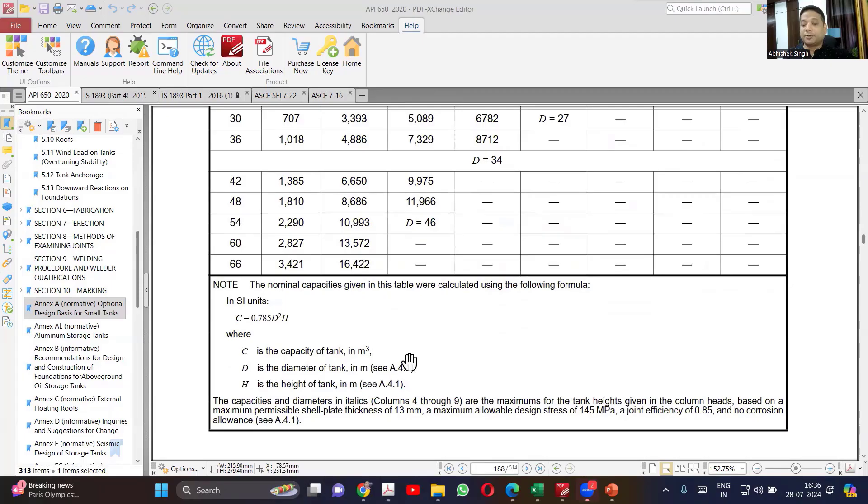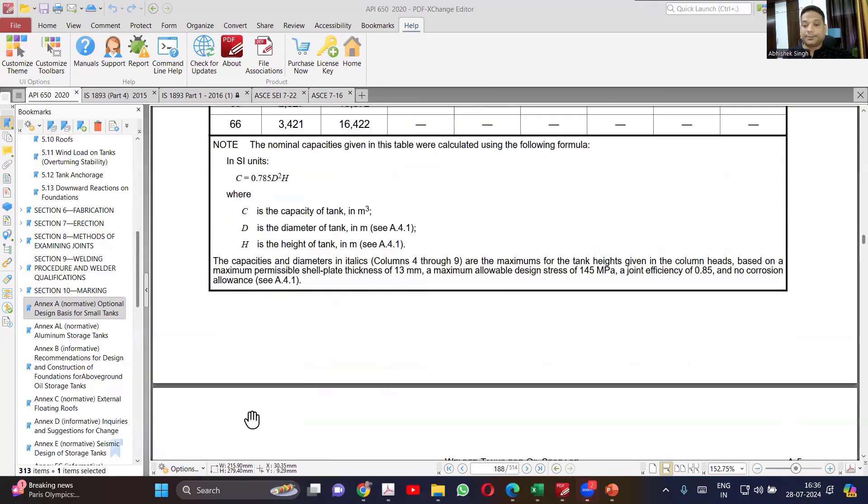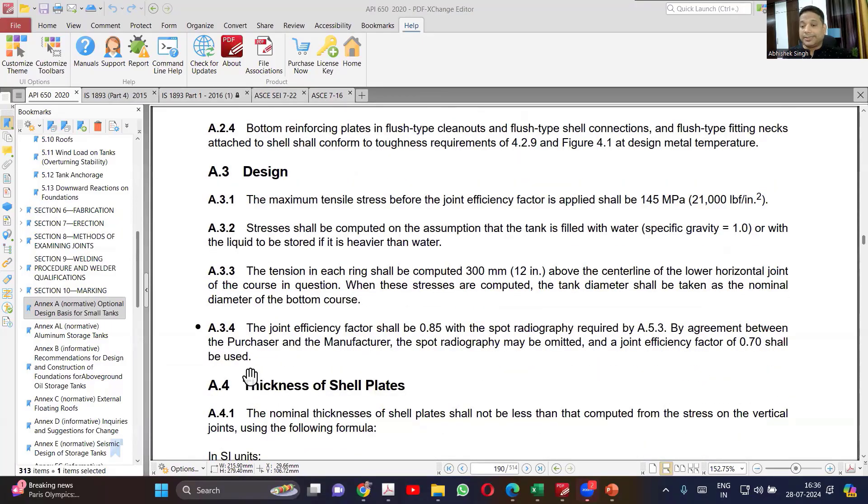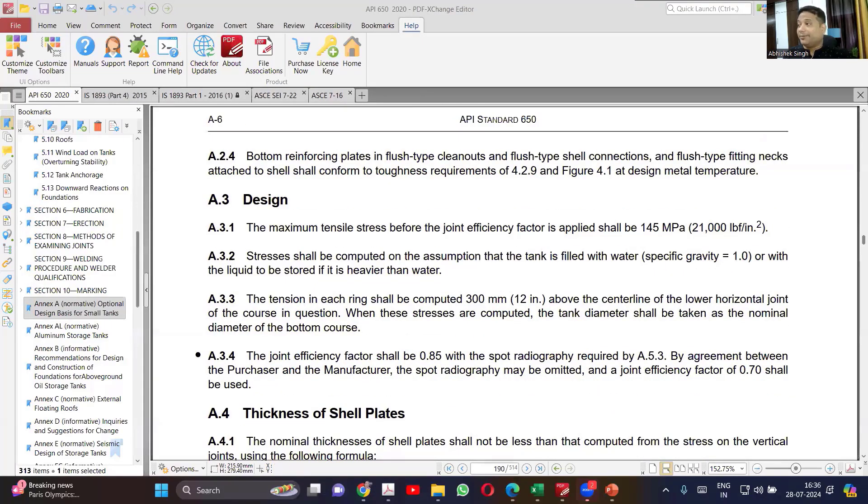So it's simple, just selection based on the capacity. How it's calculated, the formula you can see here. So design - if I'm calculating the thickness, the thickness calculation will be based on what?